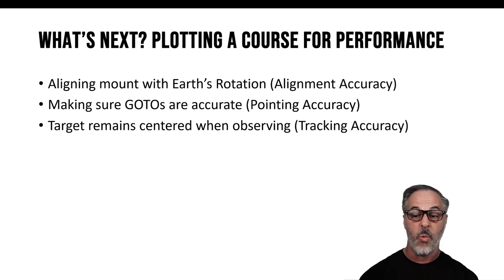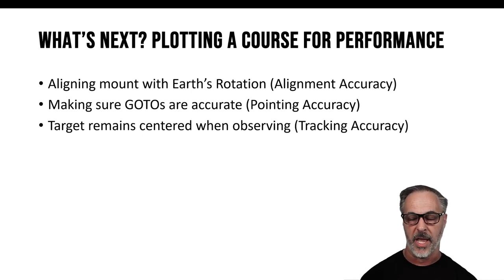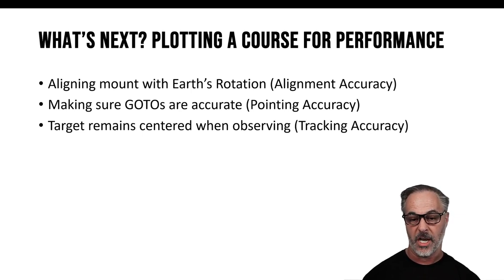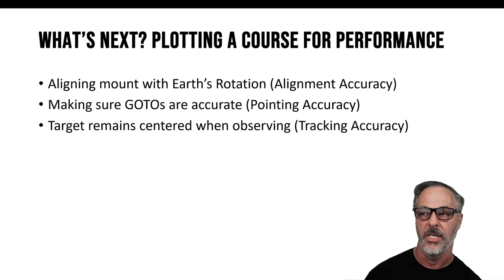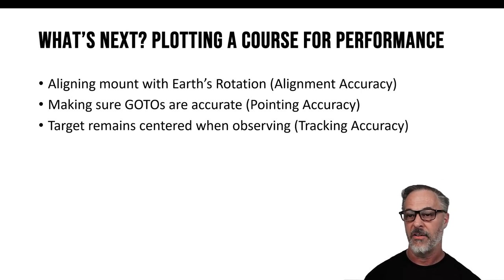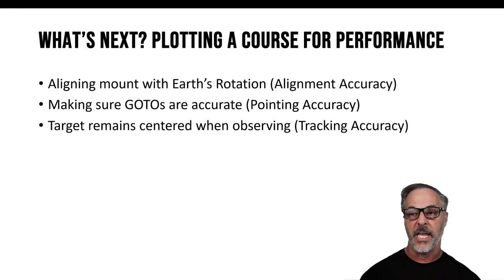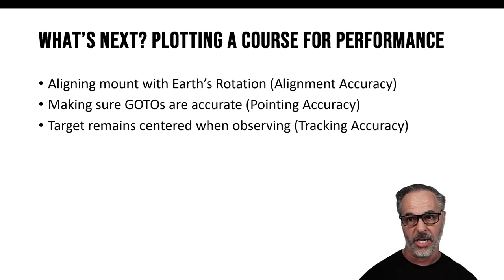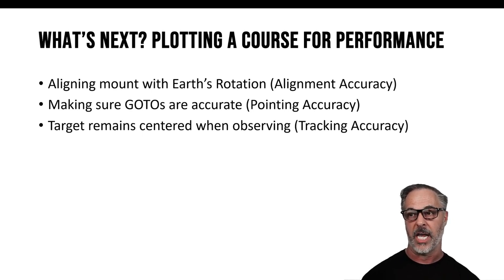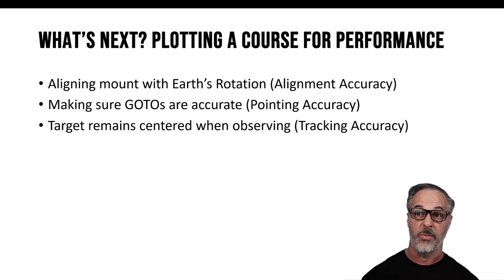The second is making sure that when you're using the GoTo computer to slew your mount to targets for observing or imaging, those slews are as accurate as you possibly can get. This is what we talk about when we refer to a pointing model and pointing accuracy — that's very, very important. The third thing is that the target remains centered when we are observing it, whether imaging or visual, and that is tracking accuracy.